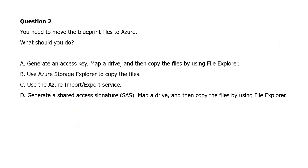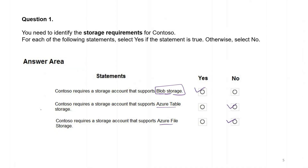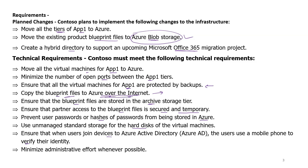Question 2: You need to move the blueprint files to Azure — what should you do? Option A is to generate an access key, map a drive, and copy files using File Explorer — this is used for file share, which is not applicable here. Option B is to use Azure Storage Explorer to copy the files — Storage Explorer can be used over the internet to upload files, so this is the correct answer. Option C is the Azure Import/Export service, which is for uploading large amounts of data using an offline method — incorrect. Option D is to generate a shared access signature, map a drive, and copy files — SAS is for temporary access, not for uploading data. The key requirement is that the upload must be performed over the internet, so Azure Storage Explorer is the correct answer.